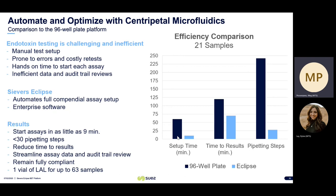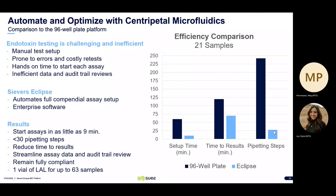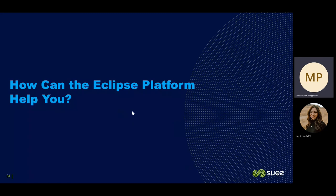Here's another chart showing the efficiency comparisons from the 96-well plate in dark blue to Eclipse in light blue, for 21 samples. You can see the setup time for the 96-well plate takes a lot longer than for the Eclipse, time to results are minimized because of the reduced setup time, and there's a clear comparison of pipetting steps for 96-well plate running 21 samples versus the Eclipse.